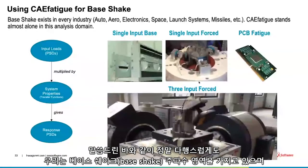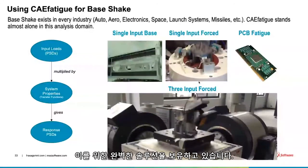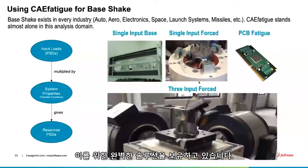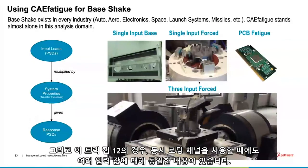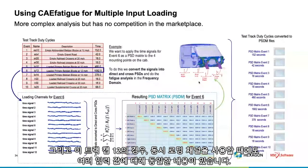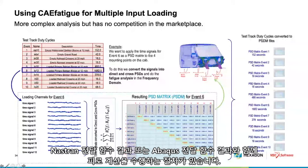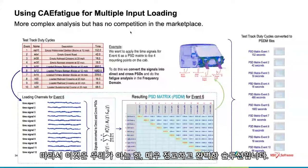We mustn't forget we also have the base shake frequency domain solution — where we feel really comfortable. We have a complete solution for this. We also have the same thing for multiple inputs — for example, in this truck cab case with 12 simultaneous loading channels — and we have procedures for transforming that loading into the equivalent frequency domain, applying it to the model along with Nastran or Abaqus transfer function results, and then going on to do the fatigue calculation. This is also a very sophisticated and complete solution.